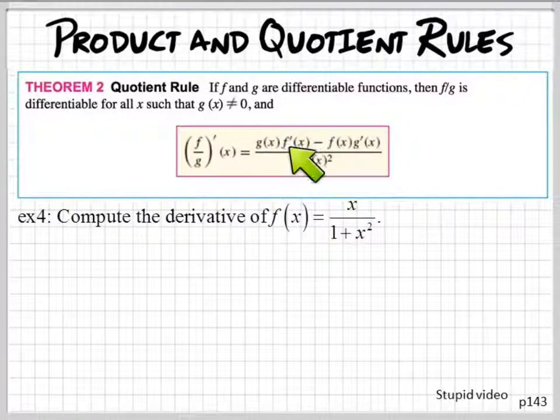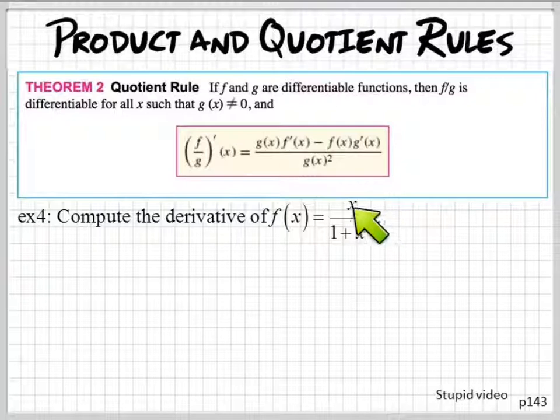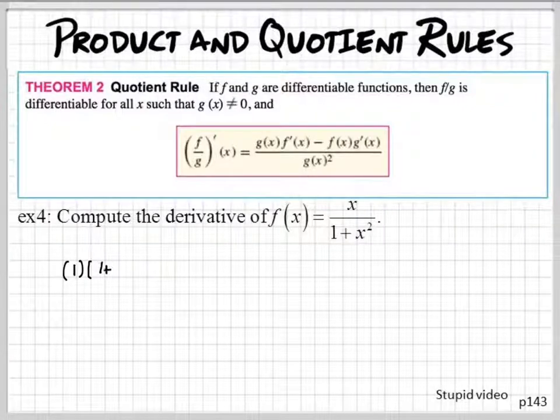So the first thing we're going to do is we're going to take the derivative of the high, high D, and then we're going to multiply it times the low. So what is, the high is X right here. So high D, X, what's the derivative of X? One. So high D and then low. What's the low? It's one plus X squared.